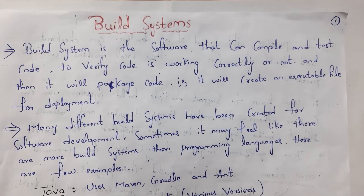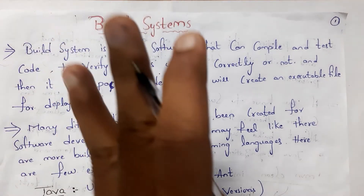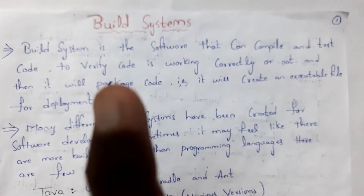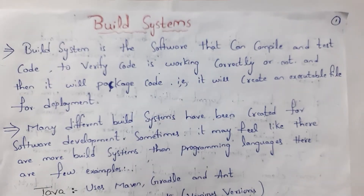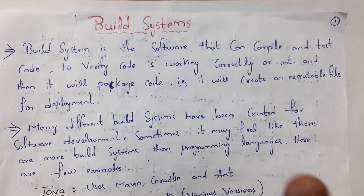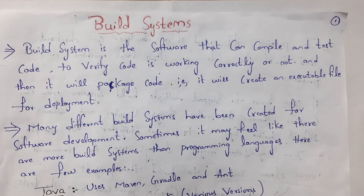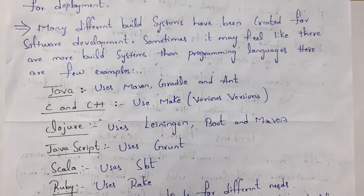A build system is software that performs three operations: one is compiling code, next is testing code, and next is packaging that code — that is, creating one executable file.